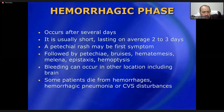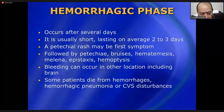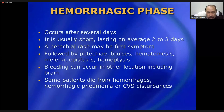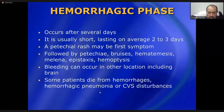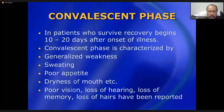The hemorrhagic phase occurs after several days and is usually short-lasting — averaging two to three days. Here, signs of hemorrhage appear: petechiae, bruises, hematemesis, melena, epistaxis, hemoptysis, and bleeding from other locations. Some patients die from hemorrhages, especially when they occur in the brain or cardiovascular system, or from hemorrhagic pneumonia. This makes CCHF more fatal than other viral hemorrhagic fevers like dengue.